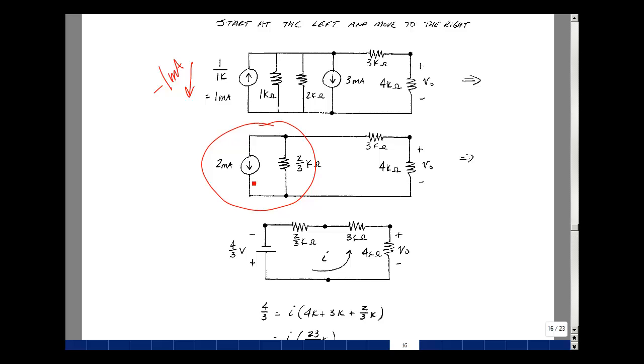Now again, the plus sign of the voltage source will be located where the current arrow is pointing towards. That would be towards the bottom here. We also create a new node by doing this series combination. It doesn't affect our problem, we're trying to solve for this voltage over here.